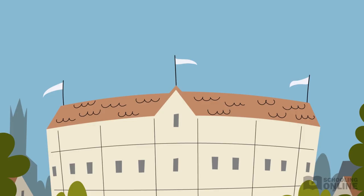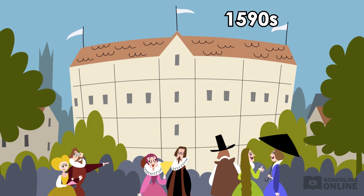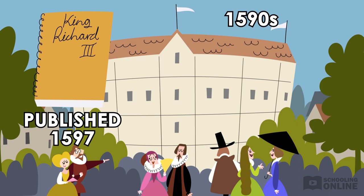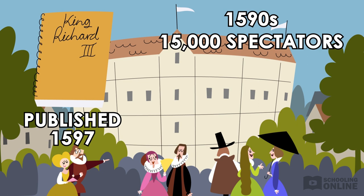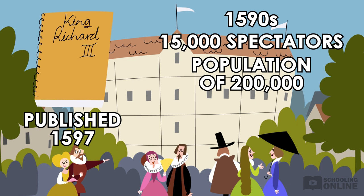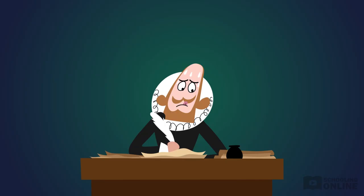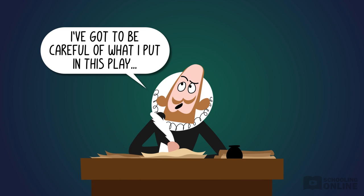By the 1590s, which was when Shakespeare wrote Richard III, plays in London attracted around 15,000 spectators a week. Considering London had a population of about 200,000 at the time, that tells us that plays in the Elizabethan period were not only popular, but they were also powerful ways to shape public opinion. But playwrights had to ensure their plays didn't spread seditious ideas that could endanger the monarchy.